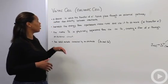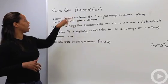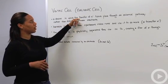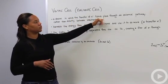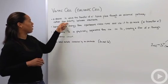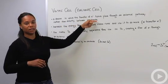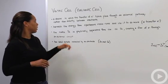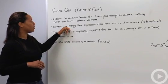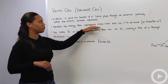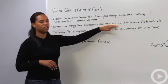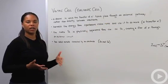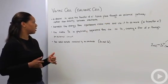More specifically, a voltaic cell is a device in which the transfer of electrons takes place through an external pathway rather than directly between the reactants. In a moment I'm going to show you a picture and discuss how that occurs. Basically, we're harnessing the energy from a spontaneous redox reaction and using it to do work. In this case, the work is the transfer of electrons.